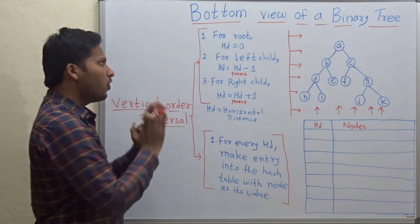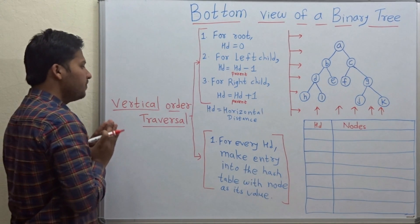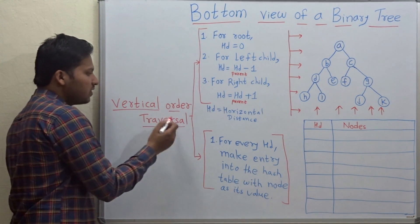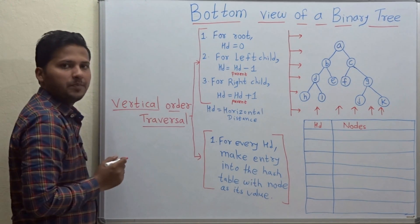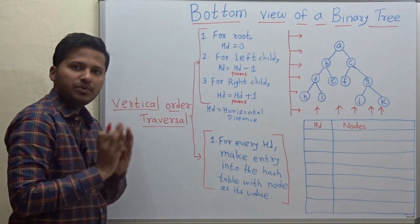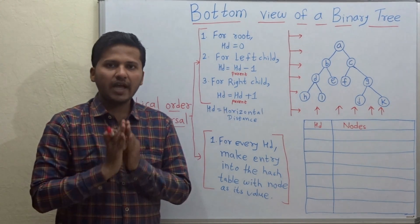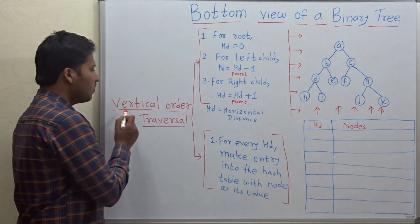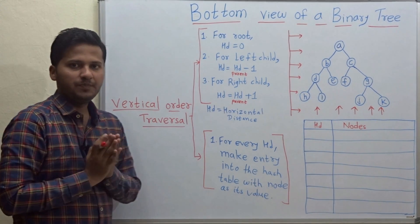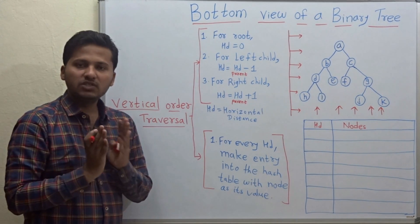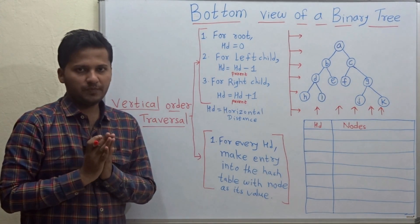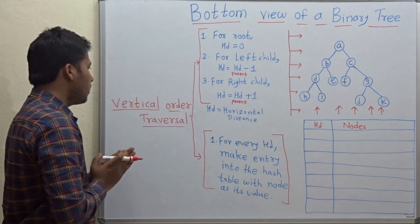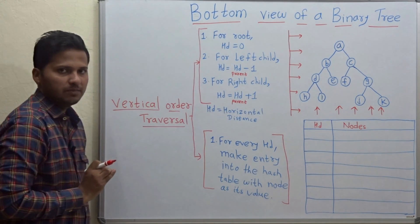For printing this bottom view we are going to use the vertical order traversal algorithm. In my previous video on this channel I have explained the vertical order traversal in detail — I have mentioned the link in the description below. In this video I will quickly revise this algorithm.